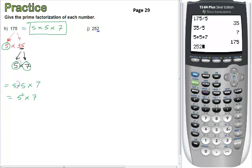So I start with 252 divided by two, and I get 126. Let me just go back and fix that: two times 126.